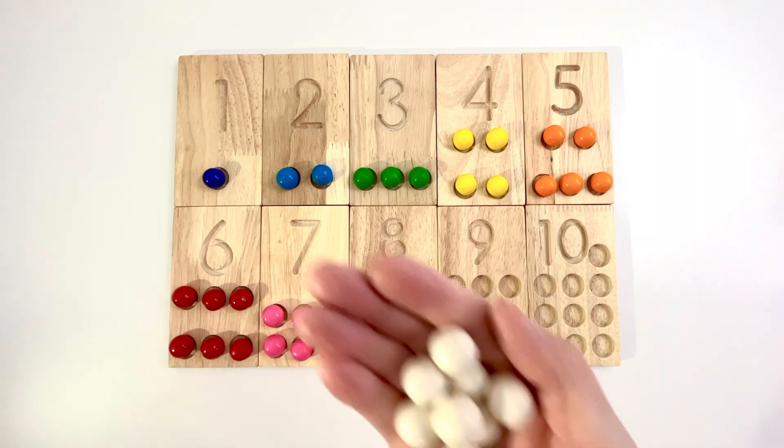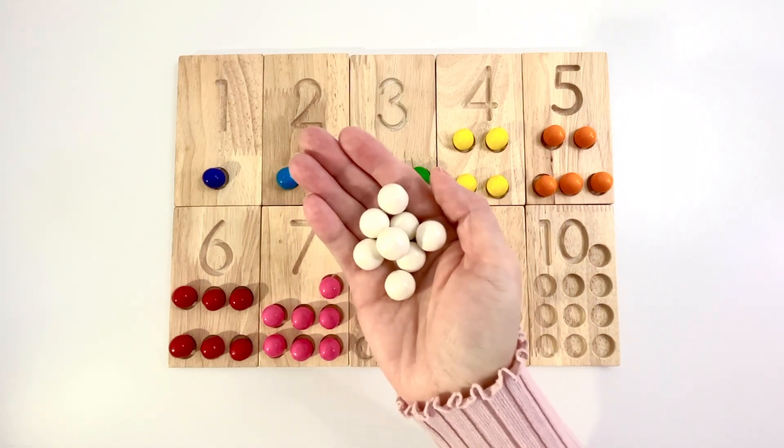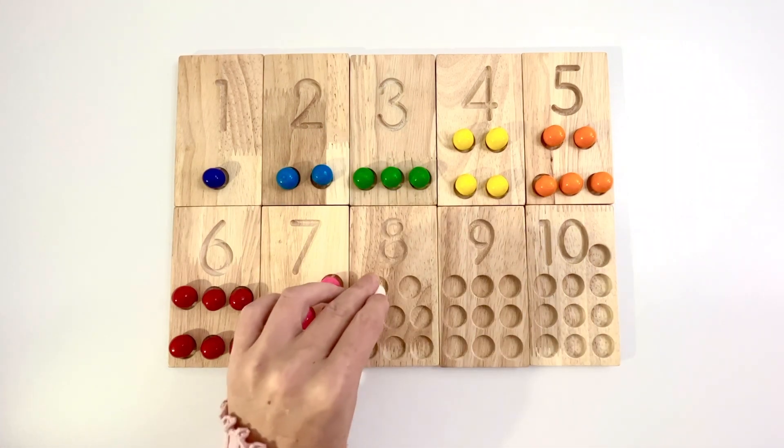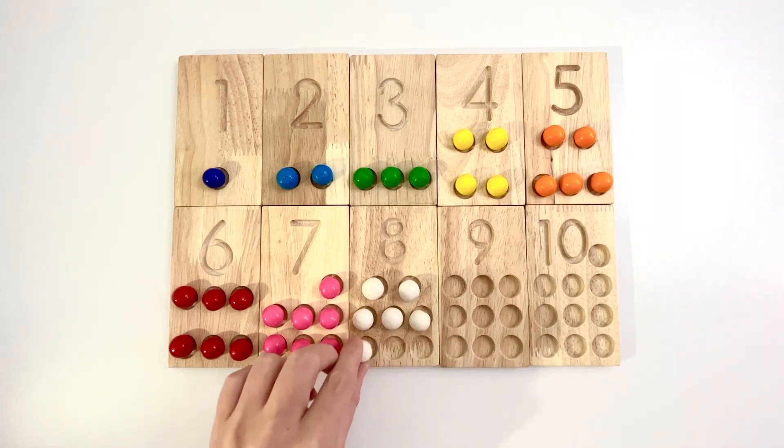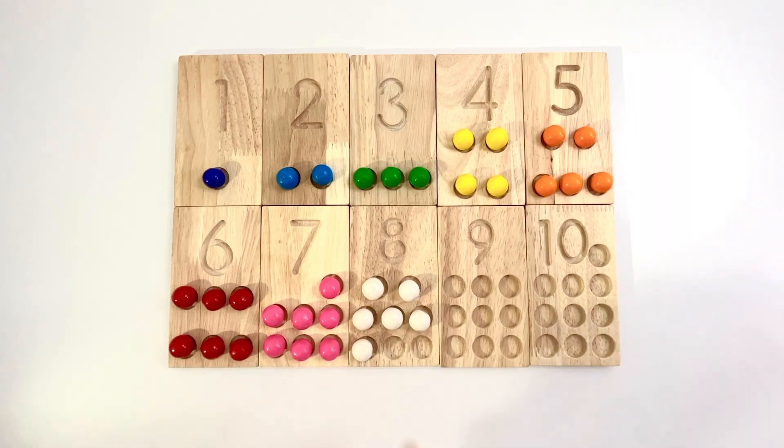Number eight. Eight white candies. One, two, three, four, five, six, seven, eight.